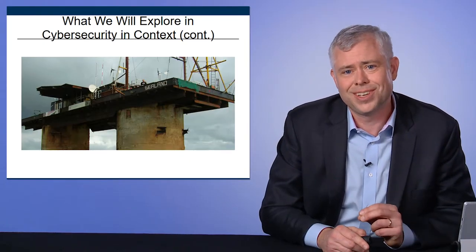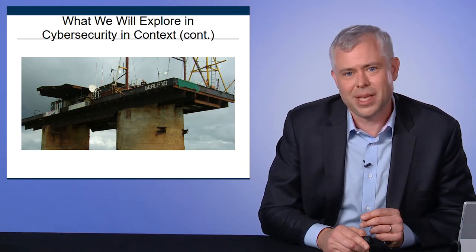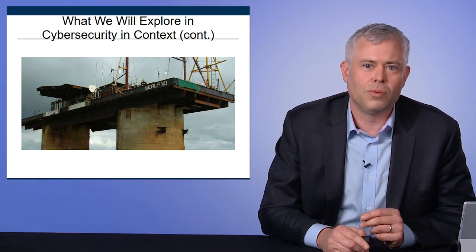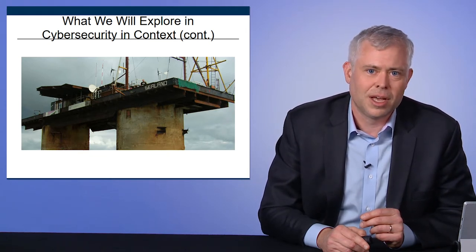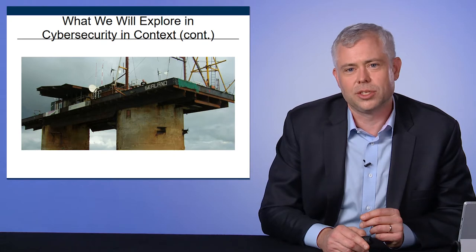We'll talk about the role of nations. This is the famous image of Sealand, the Principality of Sealand. This was an experiment in the 1990s by Internet libertarians who thought that in order to have a truly free Internet, we need to build infrastructure that is not affected by any nation state. They actually built computing resources on this former World War II platform in the North Sea. We'll talk about what Sealand means and how nation states are reasserting themselves on the Internet because of the Internet's power to erode the influence and control of nation states.